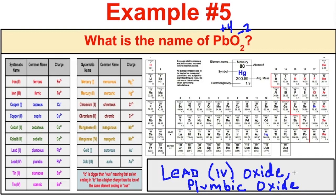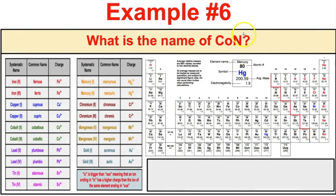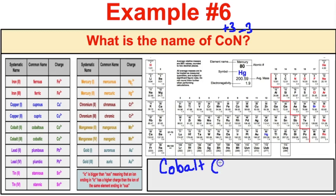Either systematic or common name should be correct depending on what your teacher requires. For CoN: nitride has a negative 3 charge and there is only one cobalt, so it must be positive 3. The name of this compound is cobalt(III) nitride.